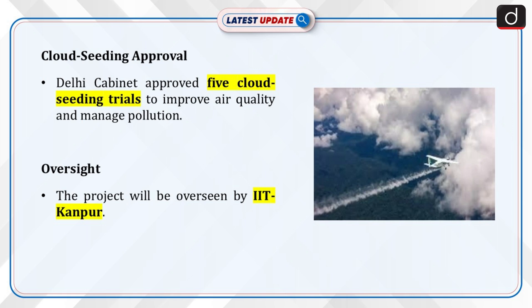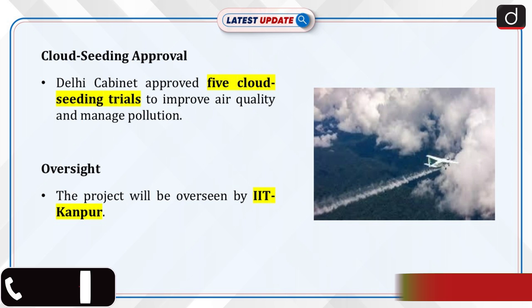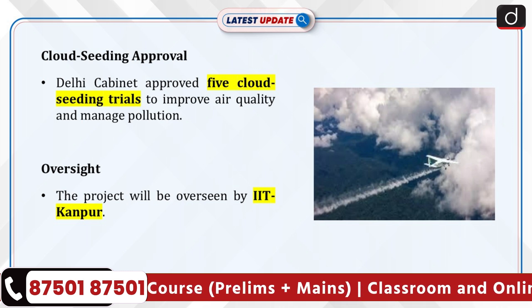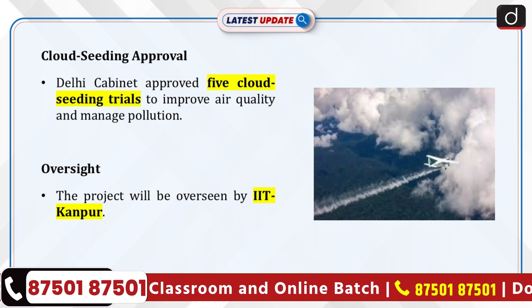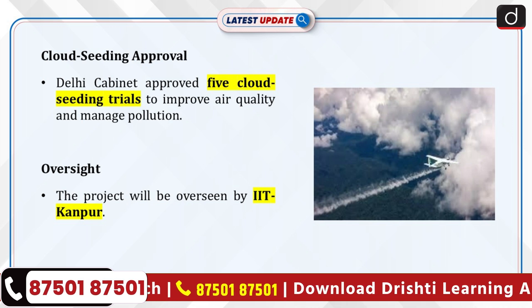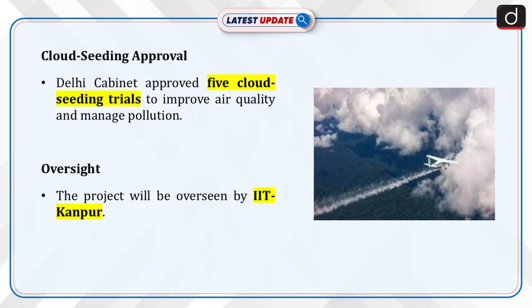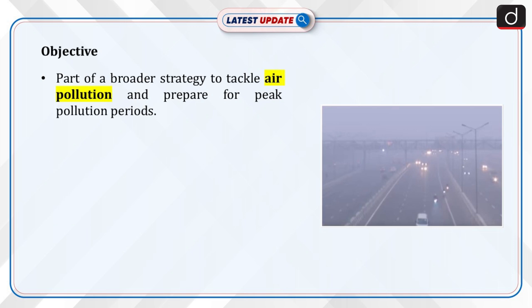The Delhi cabinet approved a proposal to conduct five cloud seeding trials aimed at improving air quality and managing pollution in the capital. The project will be overseen by IIT Kanpur. It will involve an investment of 3 crore 21 lakh rupees, with 2 crore 75 lakh rupees allocated for the trials and 66 lakh rupees for equipment calibration and logistics. The trials are part of the city's broader strategy to tackle chronic air pollution and prepare for peak pollution periods.